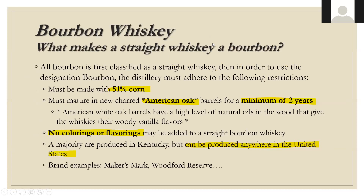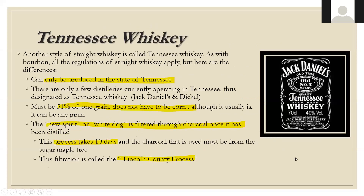What makes a straight whiskey a bourbon? All bourbons are first classified as straight whiskey. To use the designation 'bourbon,' the distillery must adhere to the following: 51% corn, matured in new charred American oak barrels for two years. American white oak barrels have a high level of natural oils in the wood that give whiskeys more of those woody vanilla flavors. No flavorings or colorings can be added to straight bourbon, and while most is produced in Kentucky, it can be produced anywhere in the United States.